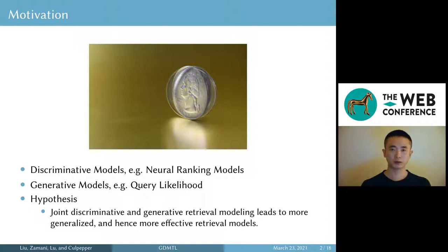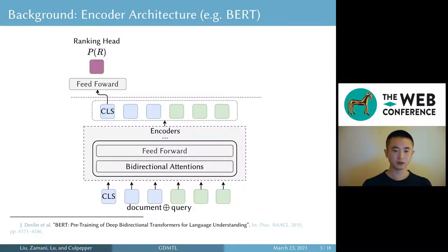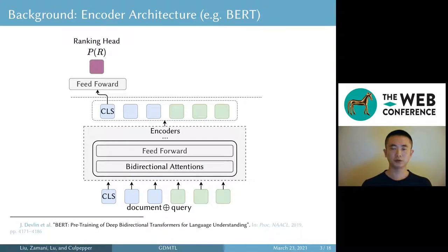Concretely in this work, we study ways to incorporate generation tasks into discriminative models so we can take advantage of the merits of both. Let's have a look at how a typical discriminative neural ranking model works. I'll use BERT as an example, but the idea applies to any transformer-encoder-based models. A common approach of using BERT for ranking is to feed the concatenation of a document and a query into BERT, and fine-tune the first special CLS token to produce a relevance score.